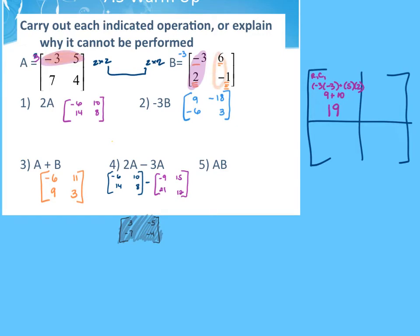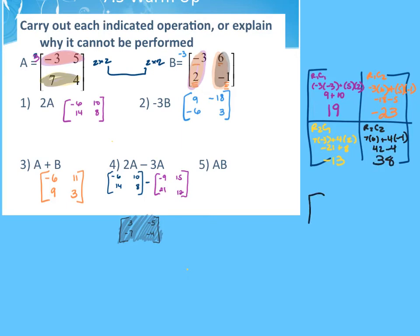Row 1, column 2: negative 3 times 6 plus 5 times negative 1 gives negative 18 minus 5, which is negative 23. Row 2, column 1: 7 times negative 3 plus 4 times 2 is negative 21 plus 8, which is negative 13. Row 2, column 2: 7 times 6 plus 4 times negative 1 is 42 minus 4, which is 38. So my ending matrix is 19, negative 23, negative 13, 38.